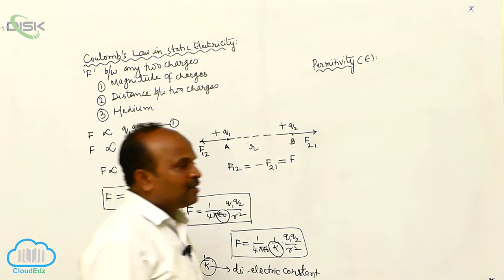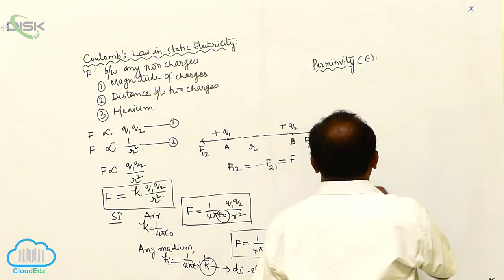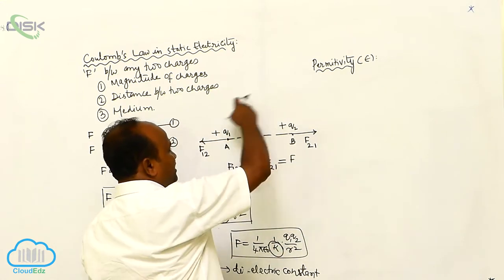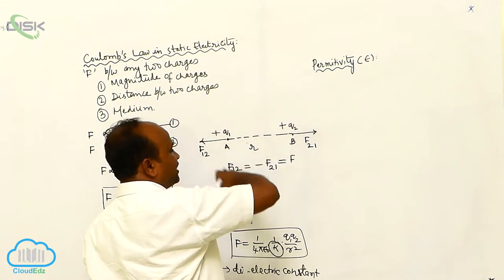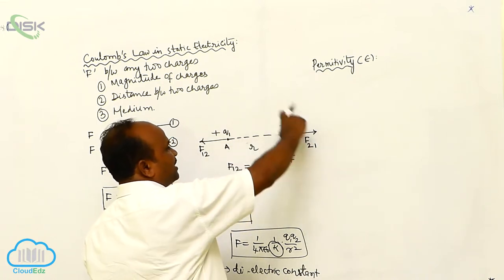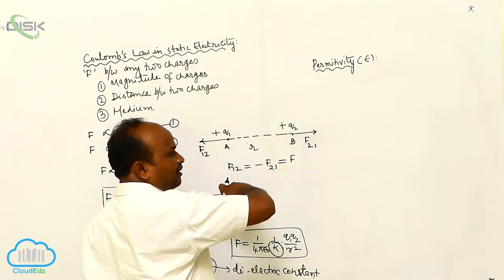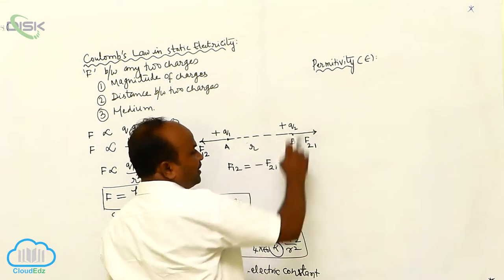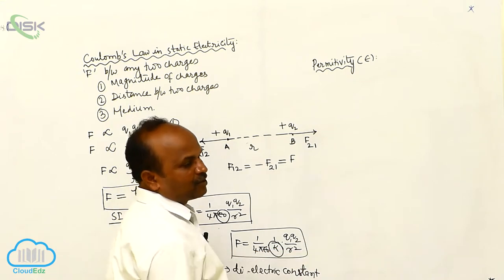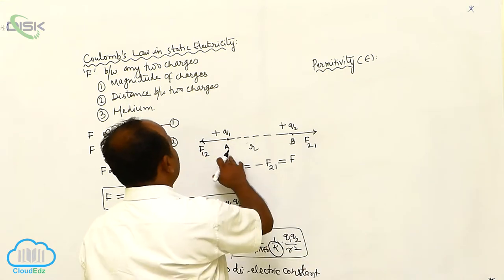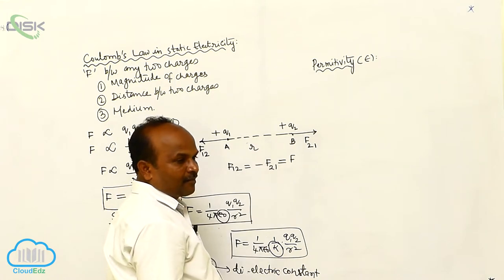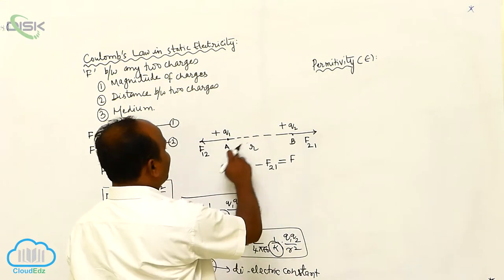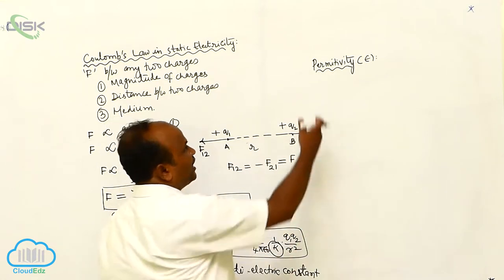Suppose these are the two charges. These two charges may be placed in air, these two charges may be placed in water, these two charges may be placed in hydrogen. There is an electrical property for hydrogen called permittivity, which determines the force between the two charges. Similarly, if these two charges are placed in air, there is an electrical property for air which determines the force between these two charges, and that is called permittivity.